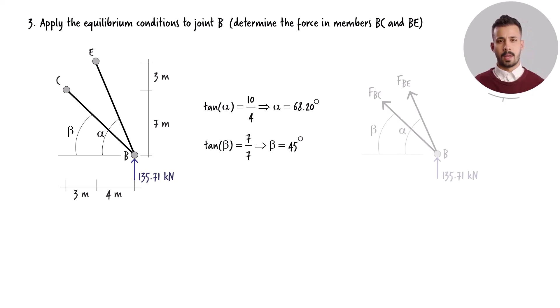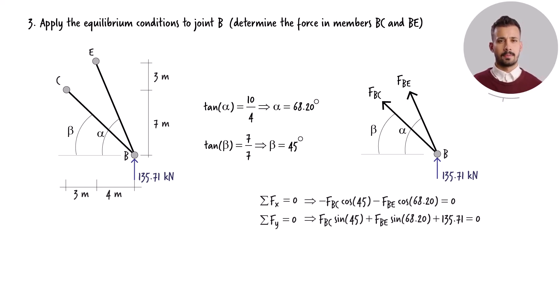Here is the free-body diagram of the joint showing two member forces, FBC and FBE. The two equilibrium equations for the joint are shown. We can simplify these equations, then solve them for the two unknown forces.